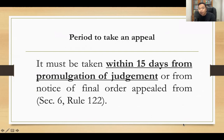When do you file an appeal? An appeal may be taken within 15 days from promulgation of judgment, or from notice of the final order after promulgation. If the accused filed a motion for reconsideration, you count the 15 days from receipt of the denial. If the accused filed a motion for new trial, you count 15 days from receipt of the order denying the motion for new trial.